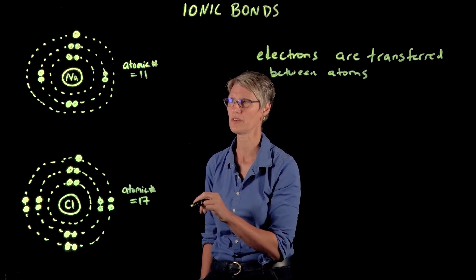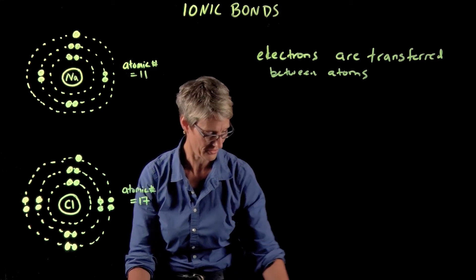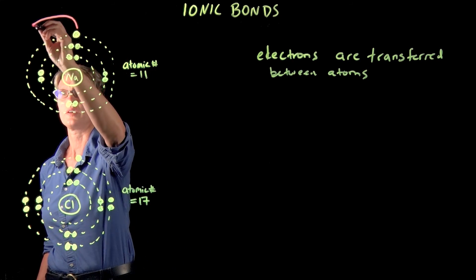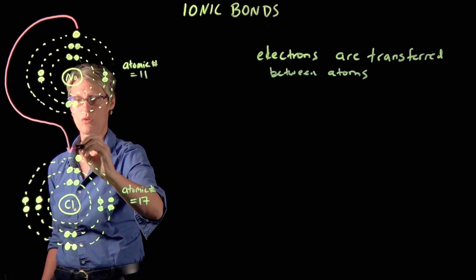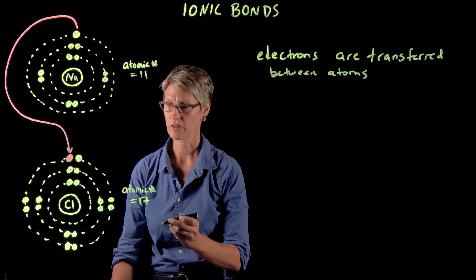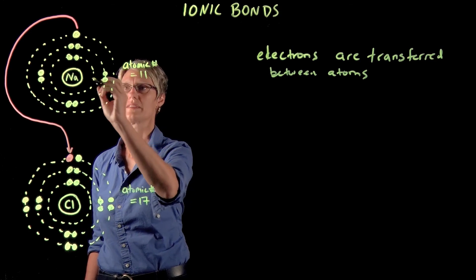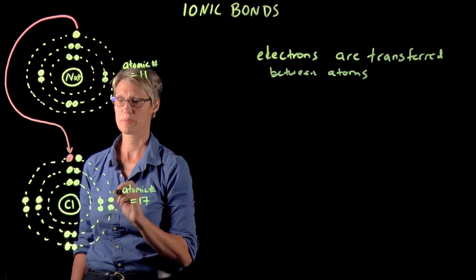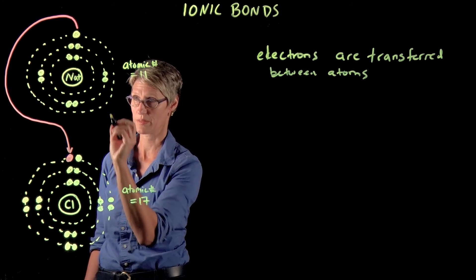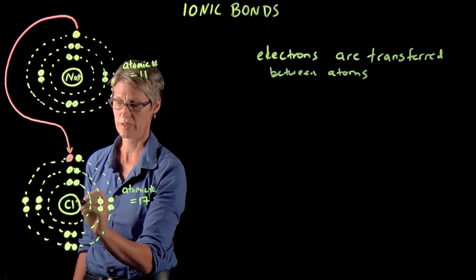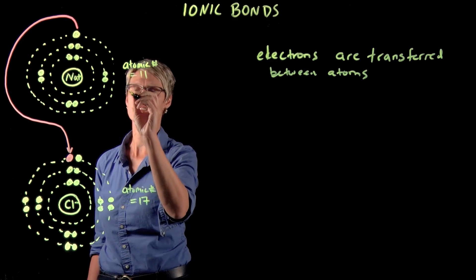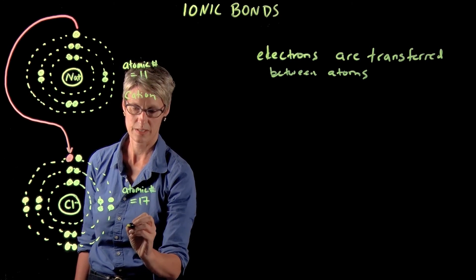What happens is that the electron actually leaves sodium and jumps over into that orbital and joins the chlorine. That creates a chloride ion. The sodium becomes a sodium ion with a plus charge — it's positively charged because it's lost one electron relative to the number of protons it has. Chlorine becomes a negatively charged chloride ion. In chemical terms, sodium is a cation — a positively charged ion — and chlorine becomes an anion.